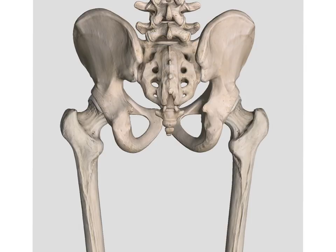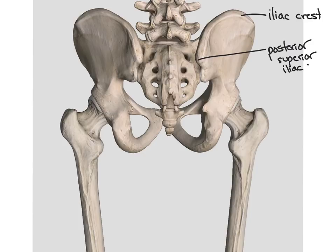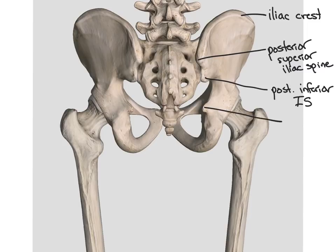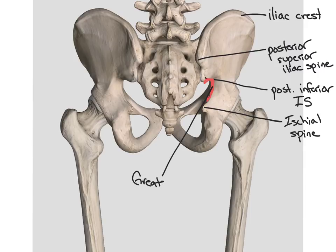Looking at the prominences on the ilium from the posterior side, we again find our iliac crest on the top. Below that we have our posterior superior iliac spine. We also have what's called our ischial spine, which is the most distal small prominence. Just below each of those are areas where the sciatic nerve runs: this area is called our greater sciatic notch, while the more inferior one is called our lesser sciatic notch.